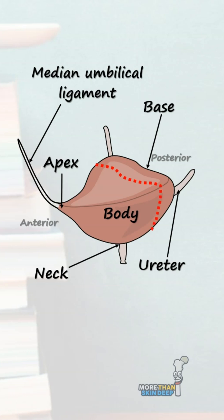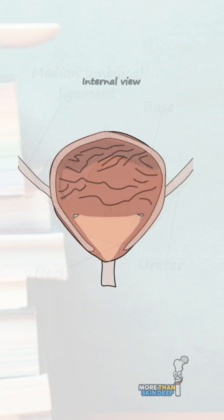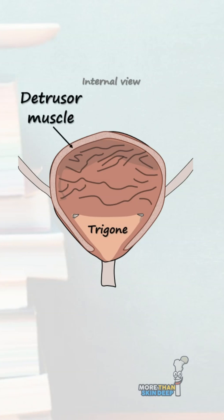Let's look inside the bladder. The smooth triangular area between the two ureters and the urethra is known as the trigone. The walls of the bladder are mostly composed of smooth muscle fibres forming the detrusor muscle.